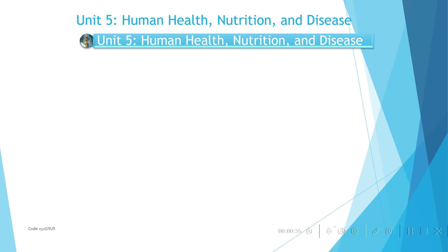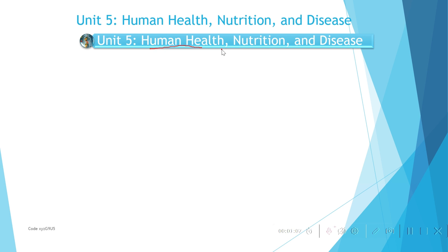So let's talk about the first thing. In this unit, you will talk about human health, nutrition, and disease. These are the main points we will focus on. You have to recall the framework of this unit, which focuses on human health, nutrition, and disease. The whole chapter will focus on these basic things.